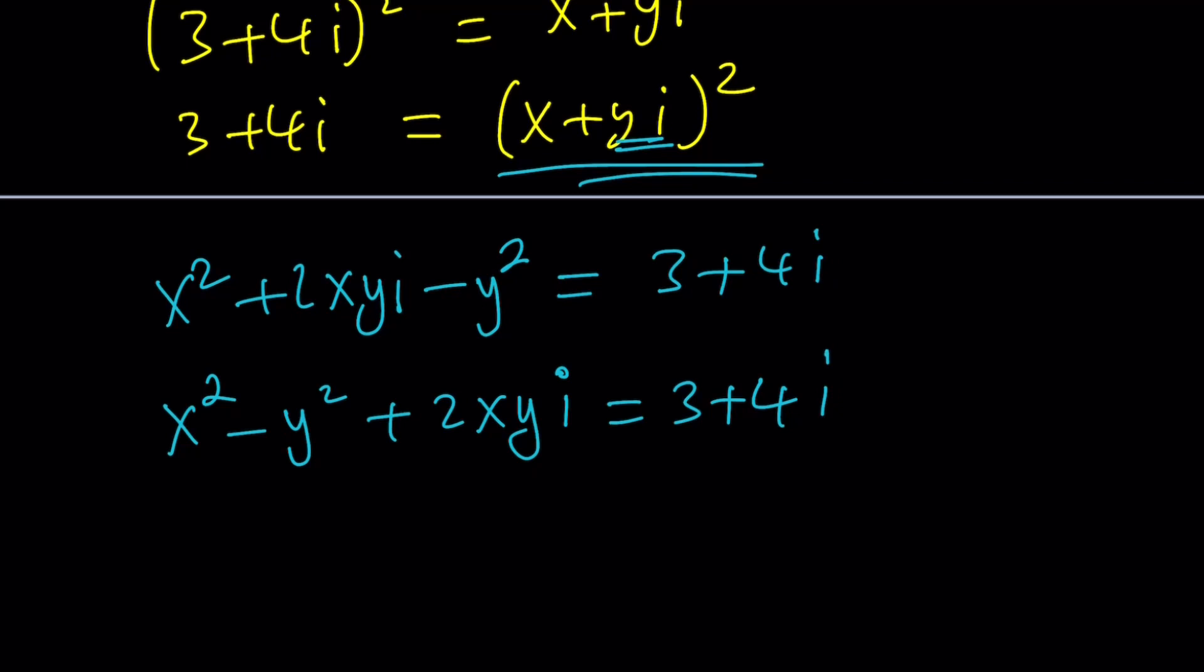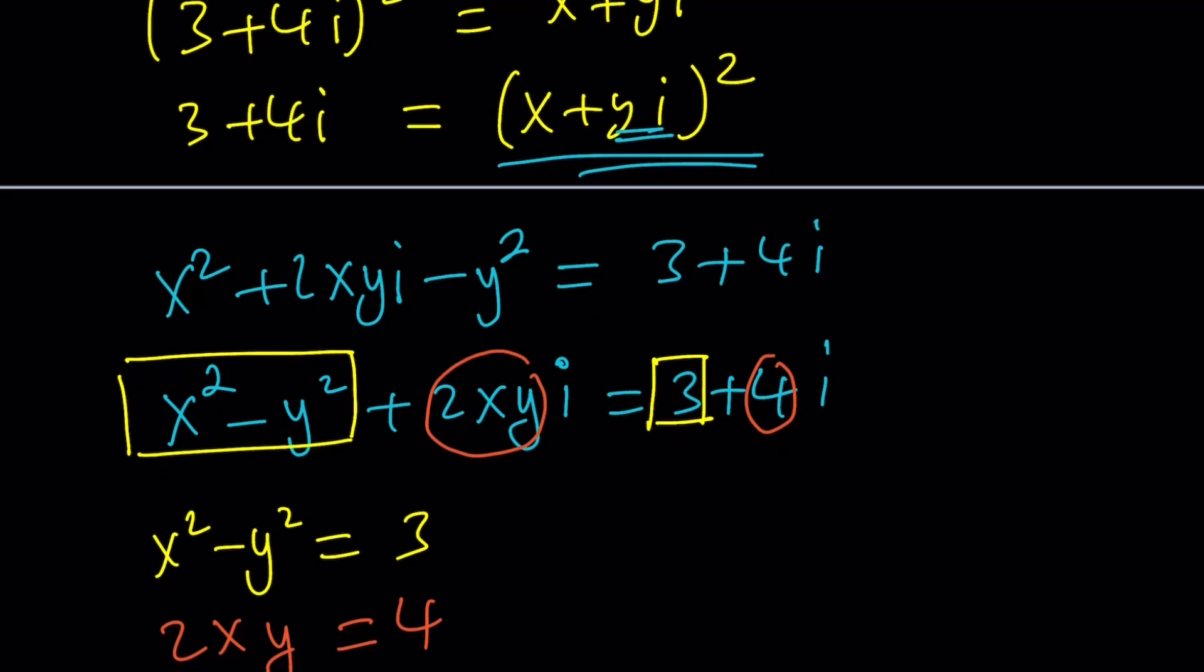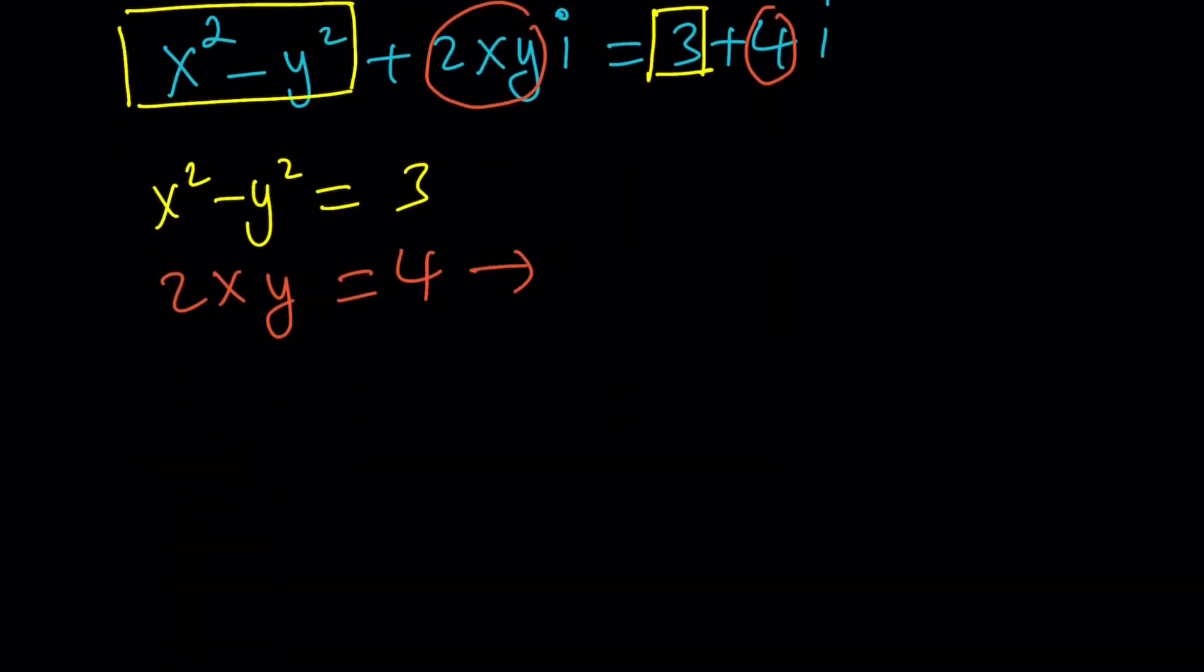x squared minus y squared plus 2xyi equals 3 plus 4i. Now here's the thing. The real part here is x squared minus y squared and it's 3 here. So x squared minus y squared equals 3. The other equation comes from here. 2xy is the imaginary part and the imaginary part here is 4. So 2xy equals 4.